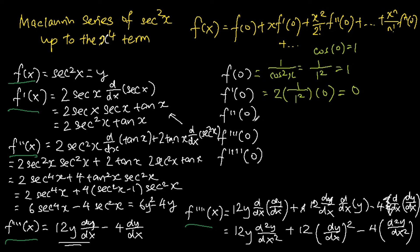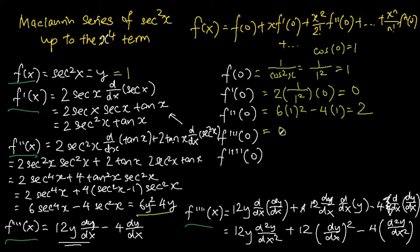Moving on to f double prime(0), we substitute y equals 1 into 6y squared minus 4y, giving us 6 times 1 squared minus 4 times 1, which equals 2. For f triple prime(0), both terms contain dy/dx, which equals f prime(0) equals zero, so f triple prime(0) is simply zero.